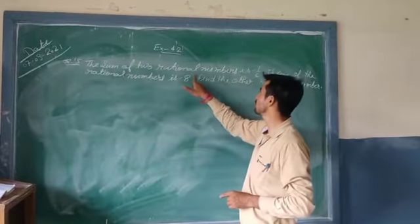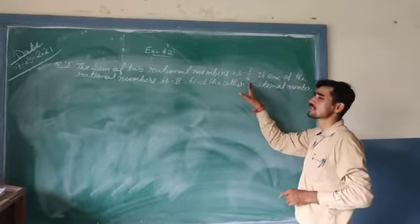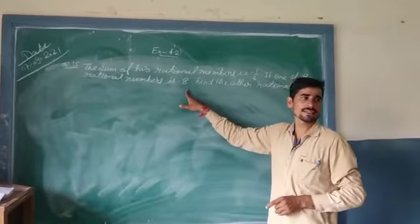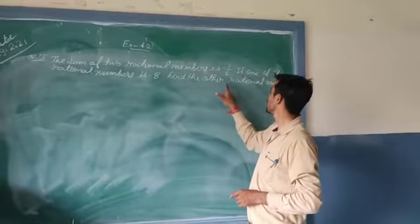The sum of two rational numbers is minus 1 upon 6. If one of the rational numbers is minus 1, find the other rational number.